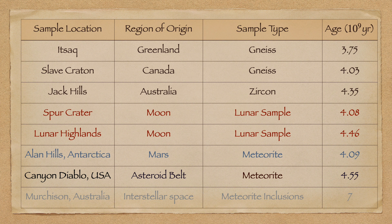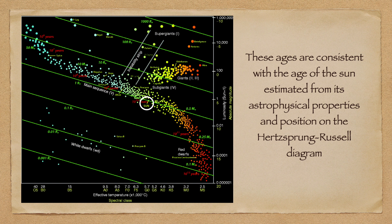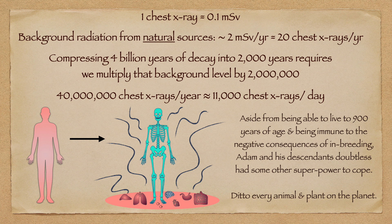But let's entertain the suggestion nonetheless. It turns out that we have access to samples that have come from very different pressure and temperature regimes. We have samples from Earth, of course, the Moon, Mars, the asteroid belt, and, surprisingly enough, interstellar space. None of these samples yield ages that are consistent with a young Earth. But they all yield ages that are consistent with one another, and consistent with our best estimates for the age of the Sun. So all of this pretty much rules out the possibility that pressure or temperature effects could have a significant impact on isotopic half-lives.